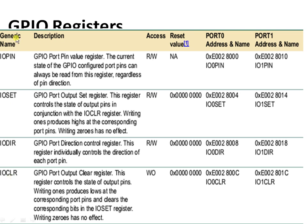The IOPIN register allows the current state of GPIO-configured port pins to always be read directly, regardless of the direction setting of the pin. Whatever values you set in IOPIN are directly reflected on the pins. In summary: IODIR sets direction, IOSET sets voltage high, IOCLR clears voltage, and IOPIN directly accesses pin state regardless of direction.